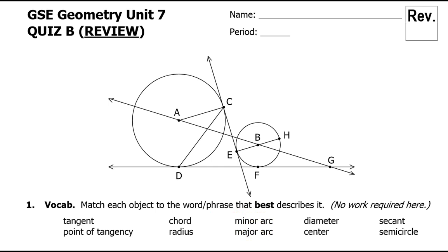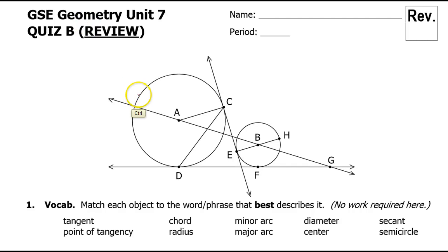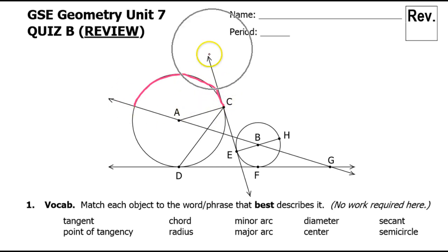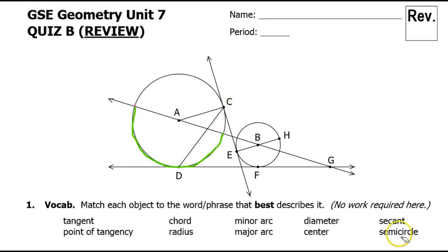A minor arc is an arc that is less than 180 degrees — less than half the circle. This would be a minor arc. The arc shown in green is going to be more than 180 because there's a semicircle right there. The semicircle is exactly 180 degrees. If you keep going past that, it's bigger than a semicircle — that would be a major arc. So the green is a major arc, the red is a minor arc, and a half-circle is a semicircle.